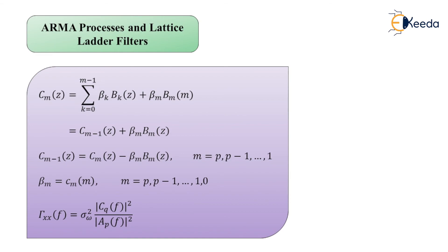That is sufficient information for the ARMA processes and lattice ladder filters associated with linear prediction and optimum linear filters. In the next topic we shall describe Wiener filters and prediction, covering the FIR Wiener filter, the IIR Wiener filter, the orthogonality condition, non-causality of the Wiener filter, and selected problems. Thank you.